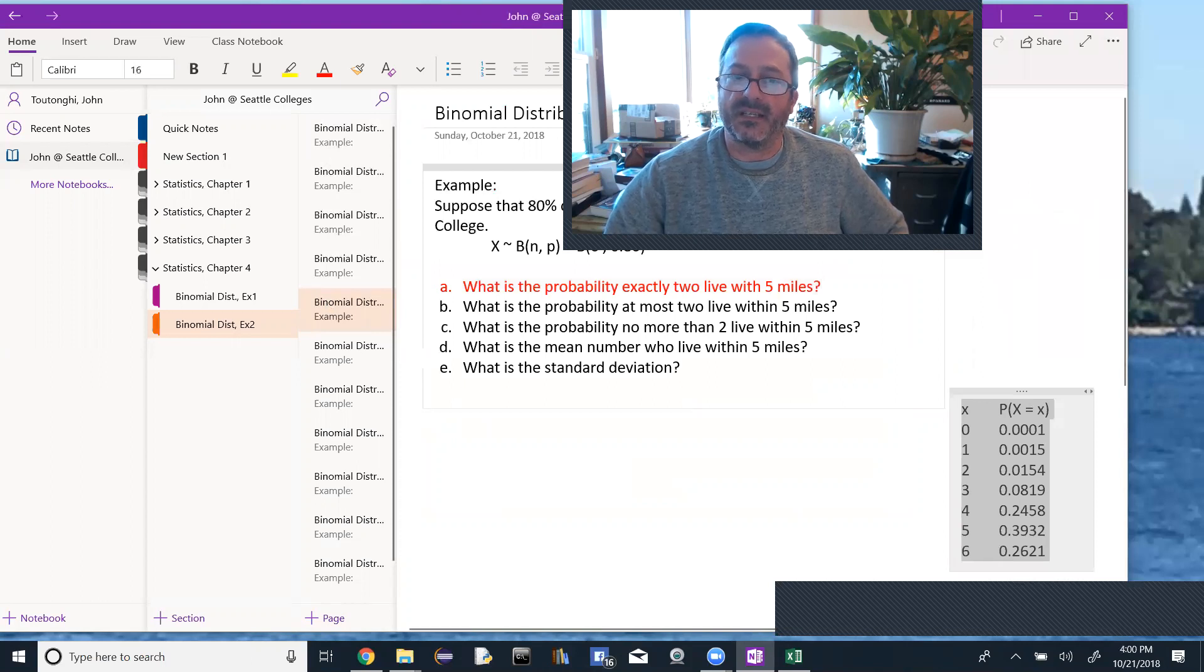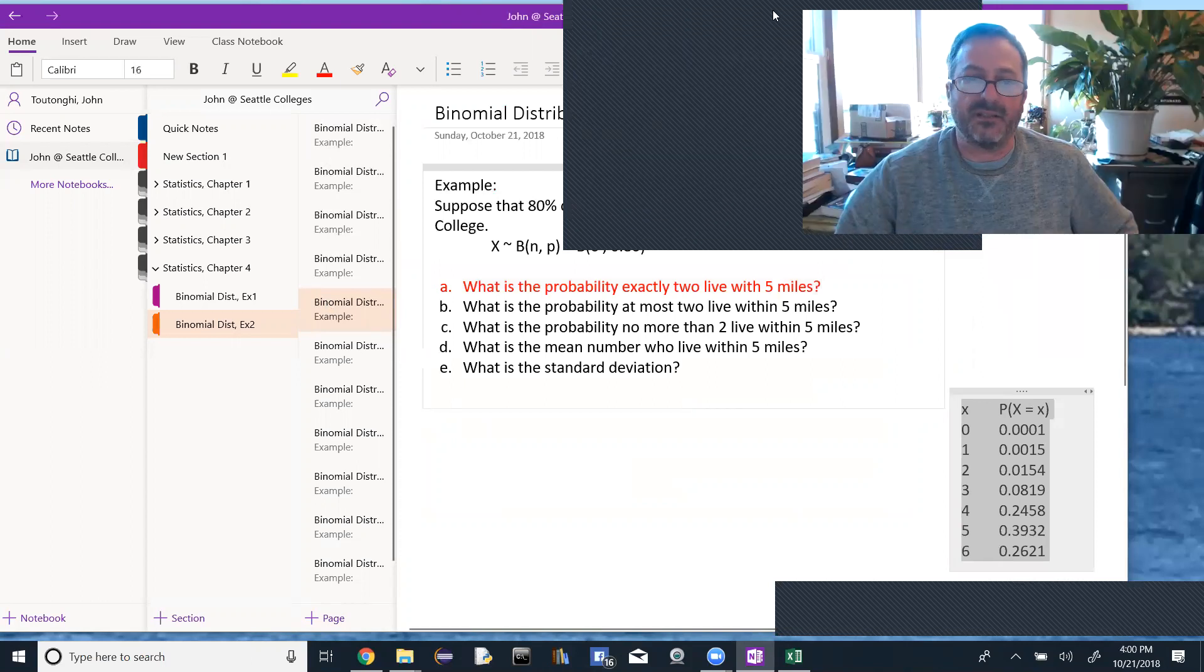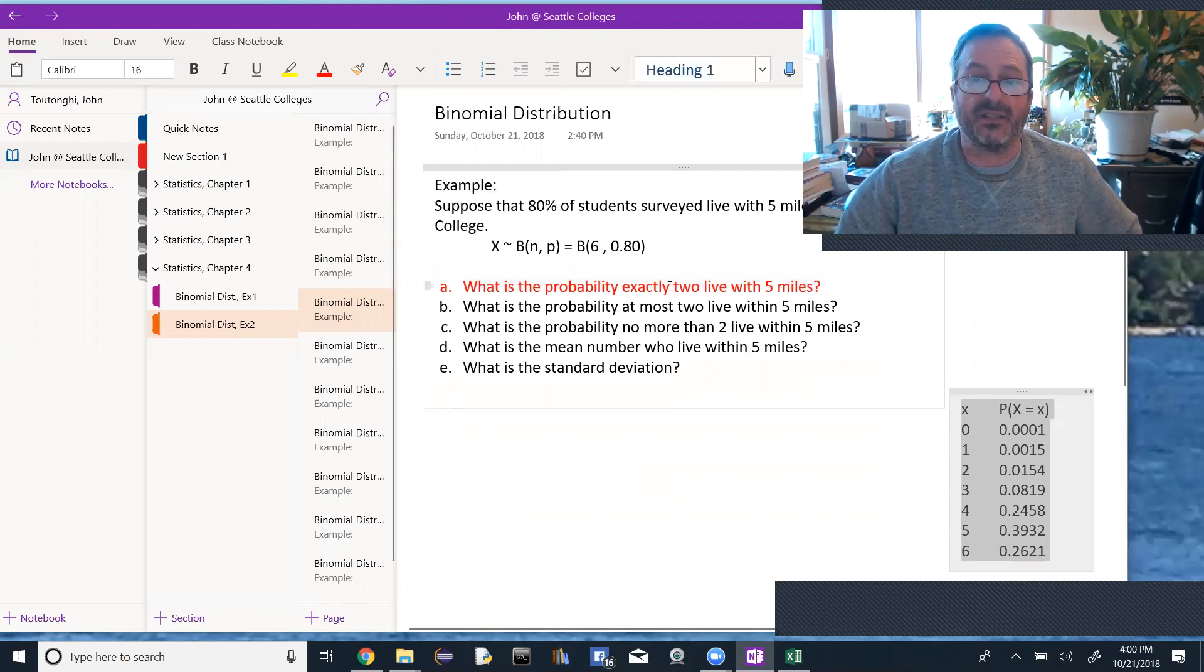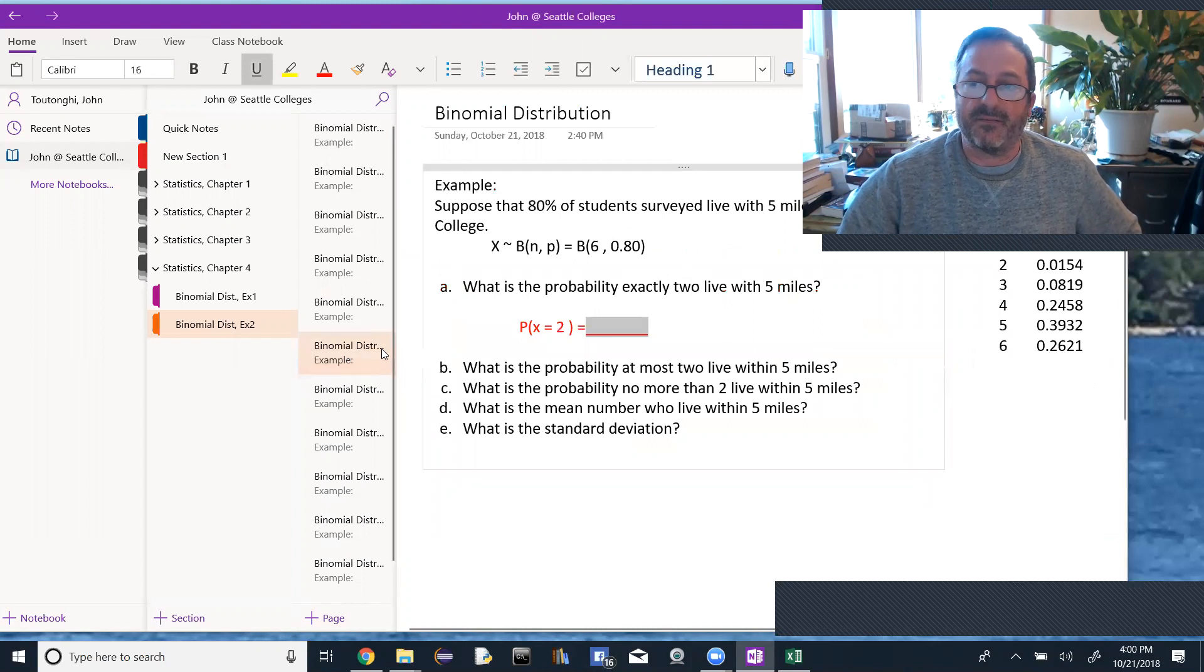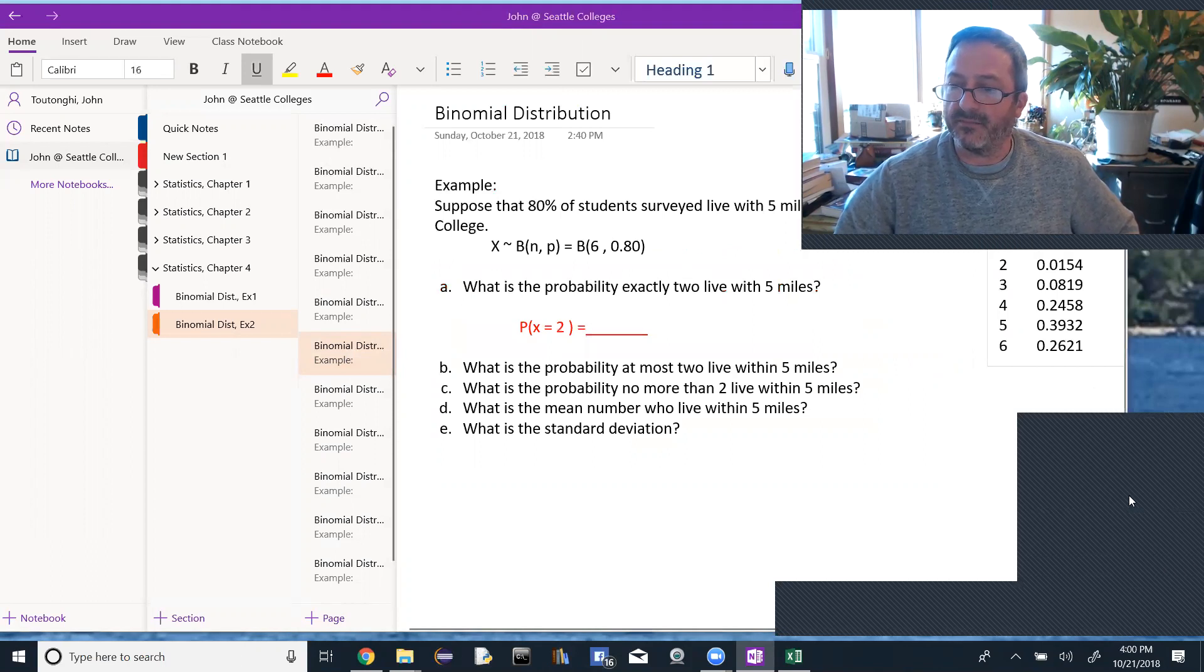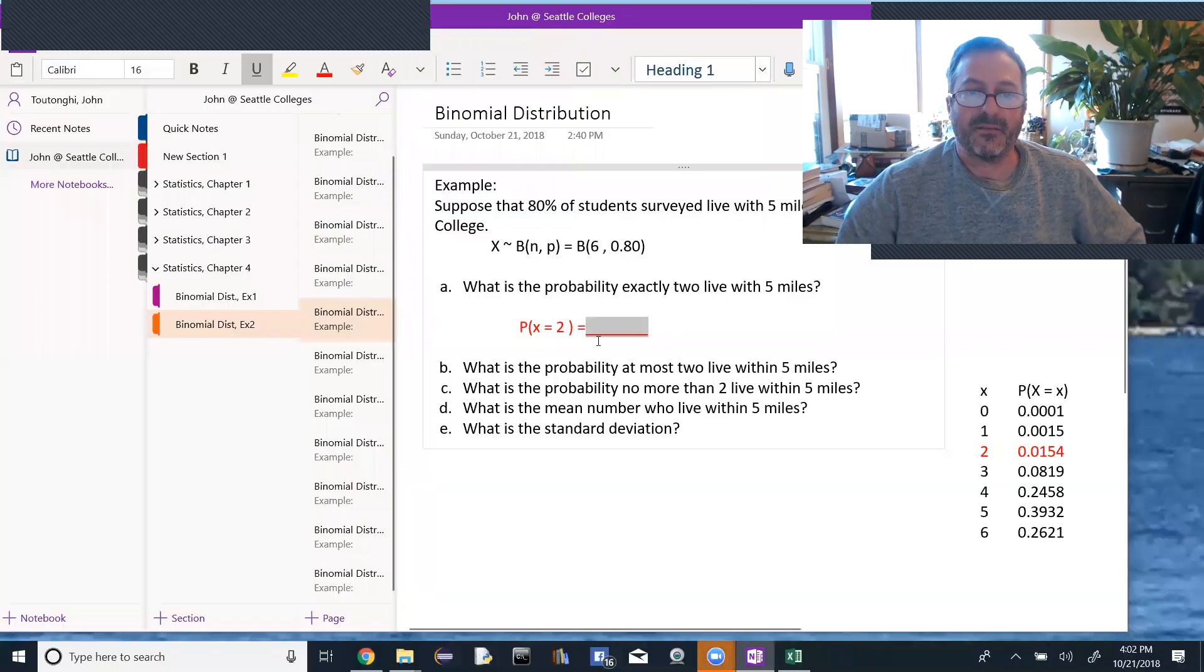So the first one is, what's the probability that exactly two students live within five miles. So that's the probability that X equals 2, and I can use the table to figure that out. So the probability that X equals 2 from the table is 0.0154. And that's our answer for part A, 0.0154.